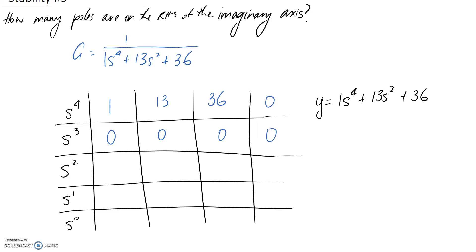So let's say that this is equal to y. What we need to do is take the derivative. So I'll call it y dash. And it's the derivative with respect to s. So the derivative of s to the 4th is going to be 4s to the 3. Derivative here, 2 times 13 is 26, s to the power of 1. And then the constant just drops off.